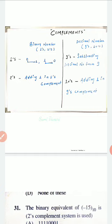After converting a binary number to the ones complement, we need to convert it into the twos complement. For converting any binary number to the twos complement, we simply add one into the ones complement. If we add one into the ones complement, then we get the twos complement.